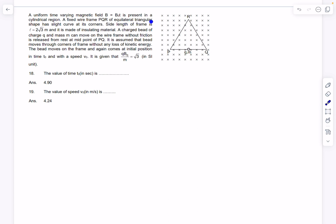A fixed wire frame PQR of equilateral triangular shape has slight curve at its corners. Side length of the frame is given and it is made of insulating material. A charged bead of charge Q and mass M can move on the wire frame without friction and is released from rest at the midpoint of PQ over here.